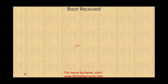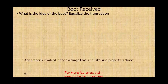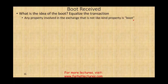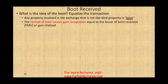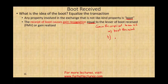Any property involved in the exchange that is not the like-kind property is a boot. The receipt of boot causes gain recognition. Here is the formula: the gain recognized equals the lesser of (1) boot received or (2) gain realized. The gain realized is the amount realized minus the adjusted basis. Additionally, no loss is recognized when boot is received — receipt of boot would cause a gain to be recognized, not a loss.